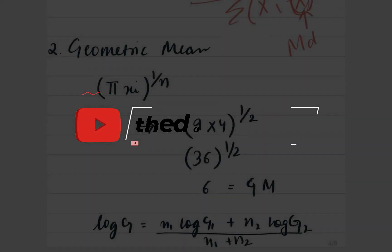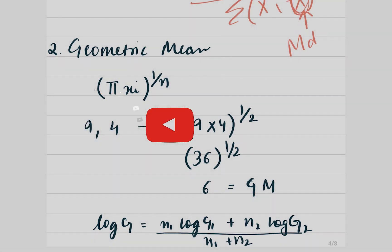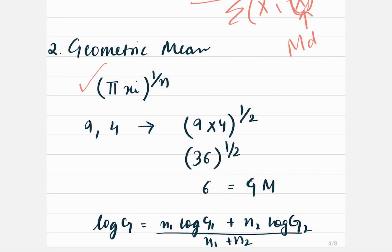Now let's move forward and understand geometric mean. Geometric mean is calculated using this formula where we first multiply each of the observations and then take the root of this, that is we take it to the power of 1 by n where n is the number of observations.